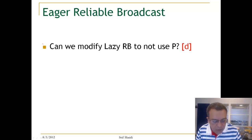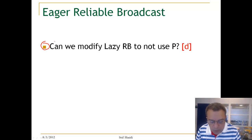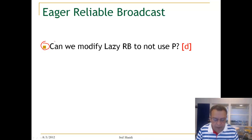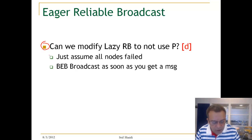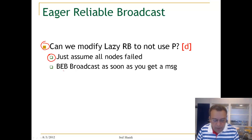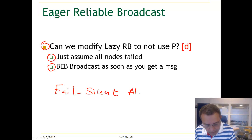Another question would be: can we modify Lazy Reliable Broadcast so that we do not use P, and of course we do not use Diamond P? If we do that, we get an algorithm that does not use any failure detector, and this means that this algorithm can be used in the fail-silent model. We don't need any failure detector. The idea is just to assume that all nodes have failed and then do a BEP broadcast as soon as you get a message, giving us a fail-silent algorithm.